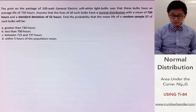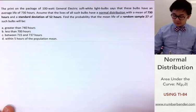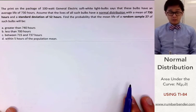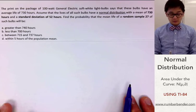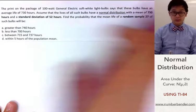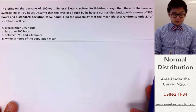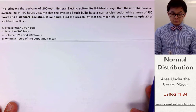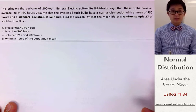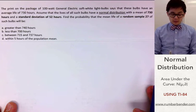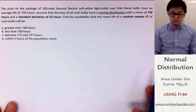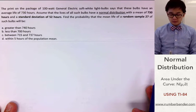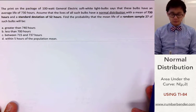This particular problem involves light bulbs and their lifespan. The package of 100-watt General Electric soft white light bulbs says these bulbs have an average lifespan of 730 hours. Assume that the lives of all such bulbs have a normal distribution with a mean of 730 hours and a standard deviation of 52 hours.